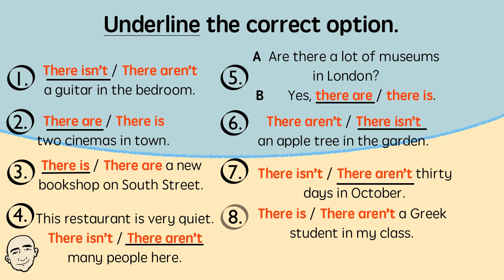Underline the correct option. There are 31 days in October. There is a Greek student in my class.